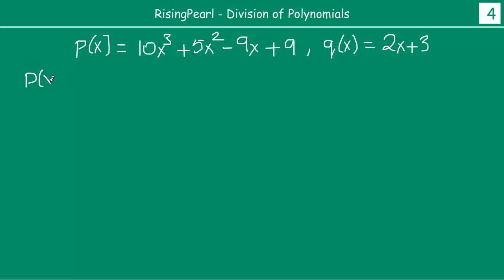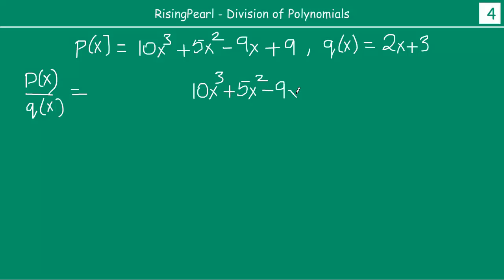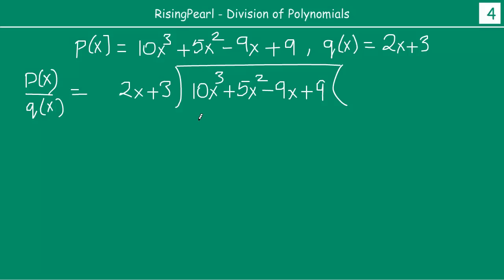So we are trying to do P(x) divided by Q(x). As always, the first thing is that you will write this in standard form. You will notice where x's power is 3, 2, 1, 0. So this is already written in the standard form: 10x cubed plus 5x squared minus 9x plus 9. This is your P(x), which is our dividend. This polynomial is also written in standard form: 2x plus 3. So friends, let's start the division.